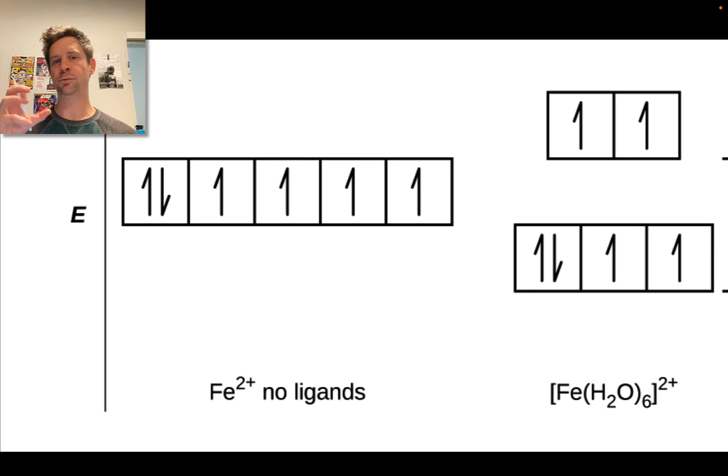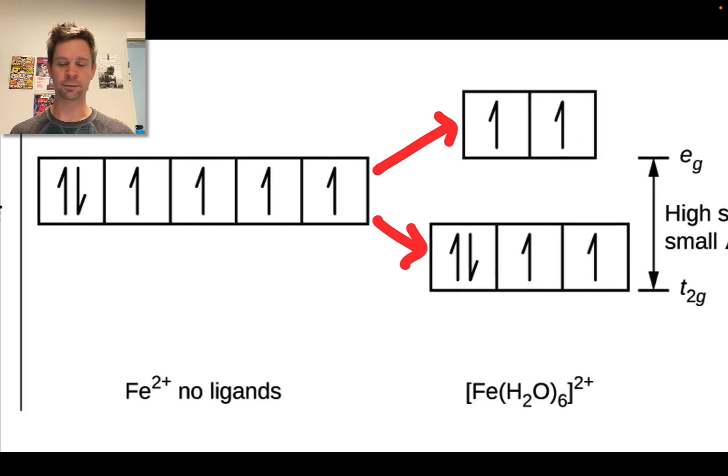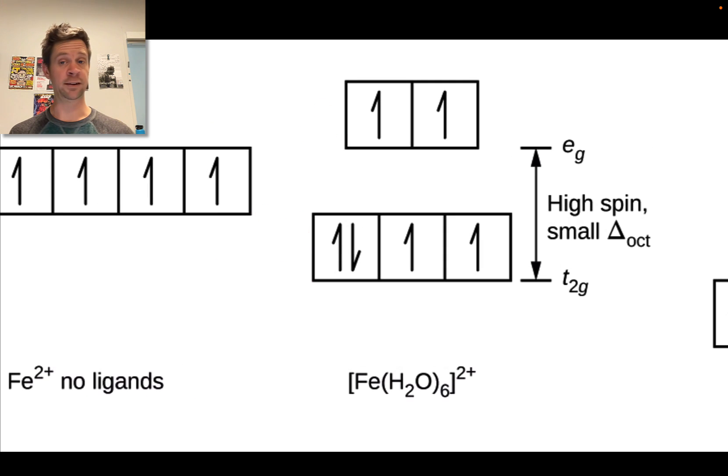Now let's imagine bringing in six water ligands in an octahedral arrangement around the iron 2 center. What happens is a splitting of the d orbitals into two sets of energy levels, the higher energy E sub g and the lower energy T sub 2g, and this is what happens in the iron 2 hexaquo complex.